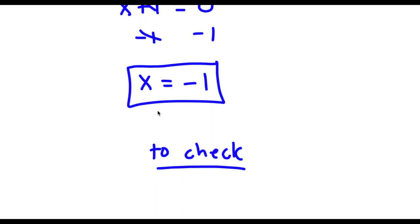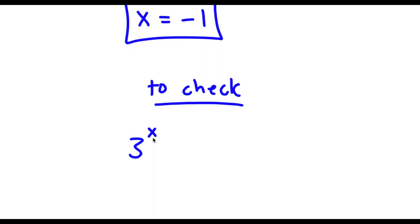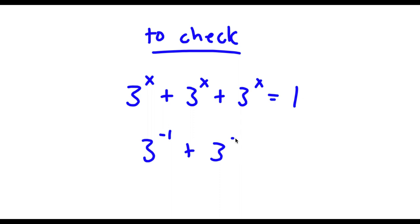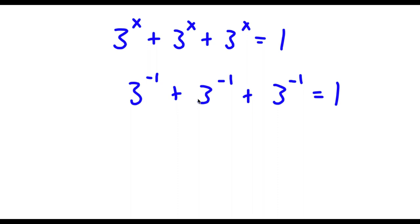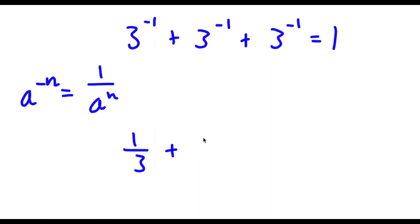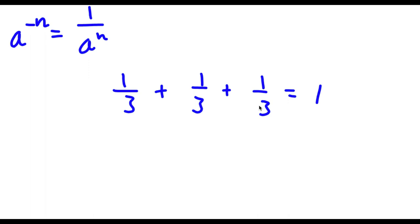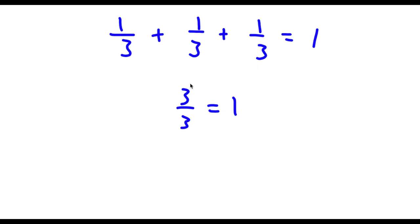So now to check: I have 3 to the power of x plus 3 to the power of x plus 3 to the power of x is equal to 1. If x equals negative 1, I have 3 to the power of negative 1 plus 3 to the power of negative 1 plus 3 to the power of negative 1 is equal to 1. Since a to the power of negative n equals 1 over a to the power of n, 3 to the power of negative 1 equals 1 over 3. So 1 over 3 plus 1 over 3 plus 1 over 3 equals 3 over 3, which equals 1. So 1 equals 1 — my solution is correct.